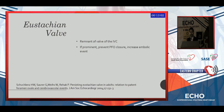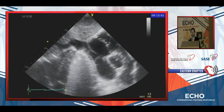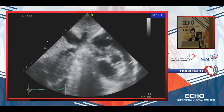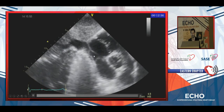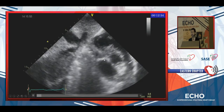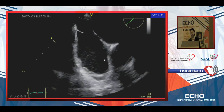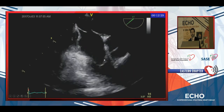What about the Eustachian valve? It's a remnant of the valve of the IVC — it should direct IVC flow directly to the fossa ovalis. If prominent after birth, it will prevent PFO closure and also increase embolic events. This is an example of a prominent Eustachian valve. As you can see, the IVC flow is directed to the fossa ovalis, which will prevent its closure.